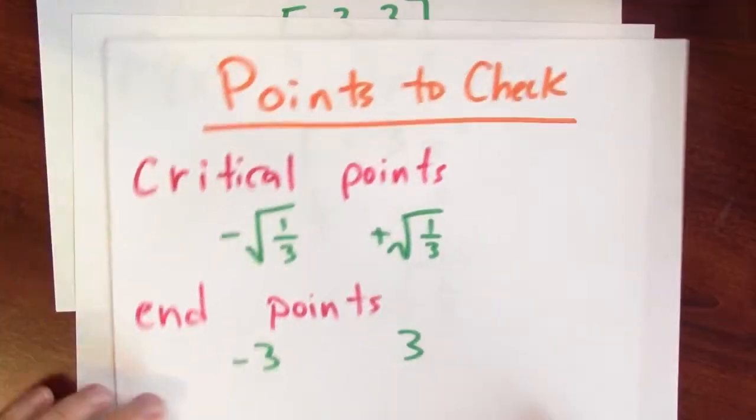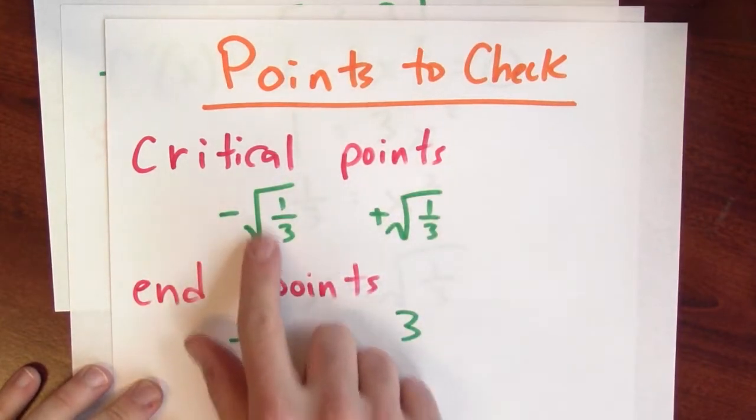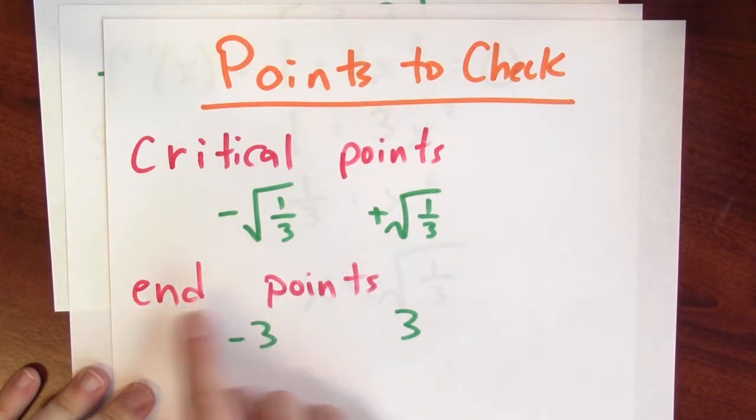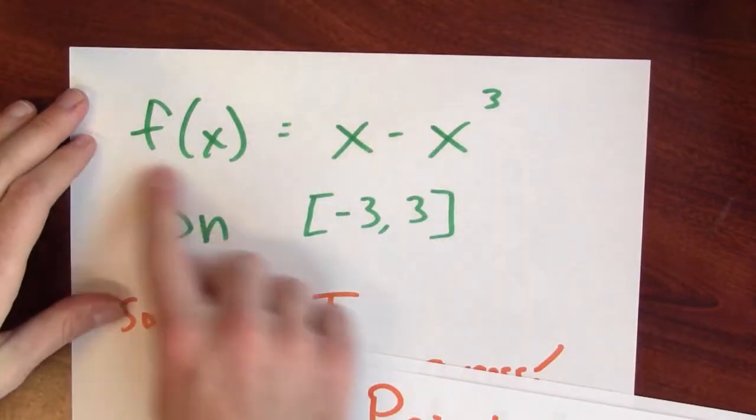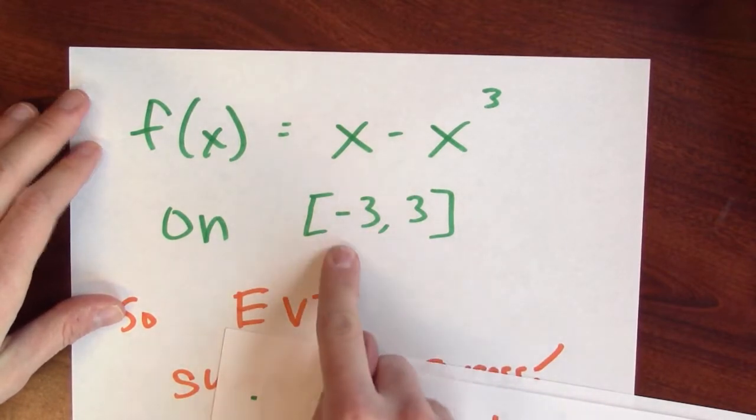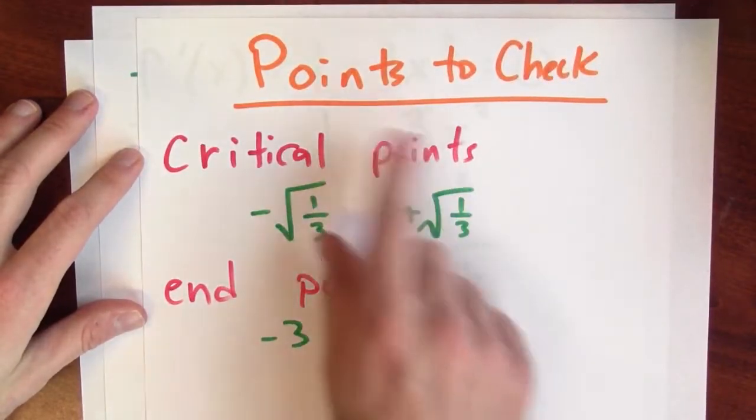I'm also going to be careful to list the endpoints and we'll see why we have to. So here are the points that I should check, right? I should check the critical points, and I just found those two critical points: negative square root of a third and positive square root of a third. And I also want to check the endpoints, right? And my original question is asking me to maximize and minimize this function on this interval, which includes the endpoint minus 3 and the endpoint 3. So I'm going to include those in the list of points to check.